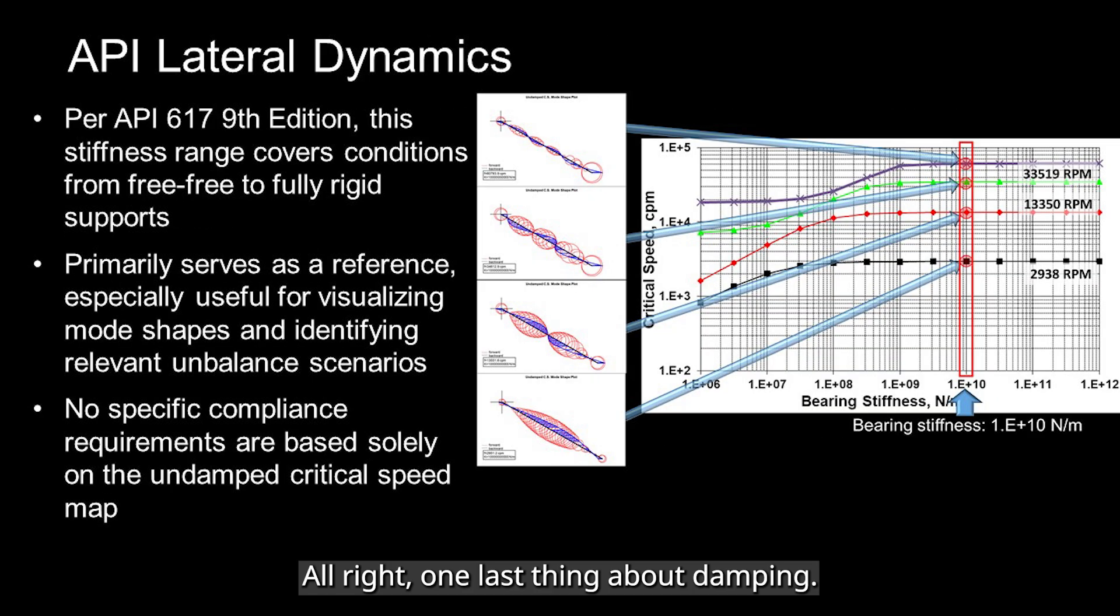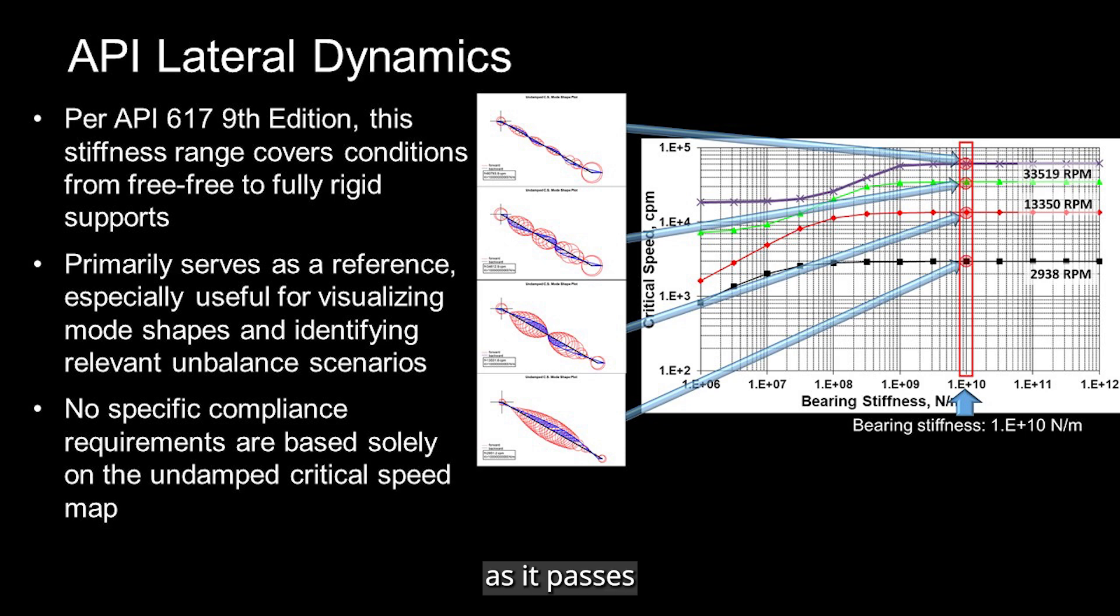Alright, one last thing about damping. What we have been looking at is an undamped critical speed map. That means it does not account for the effect of damping. But in a real machine, damping, especially from the bearing, can make a big difference. If there is enough damping in the system, it helps to reduce how much the rotor vibrates as it passes through those critical speeds. The bottom line is that damping is your friend. It plays a key role in helping the rotor get through those tricky speed ranges without running into trouble.